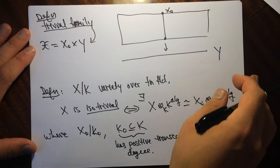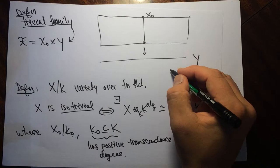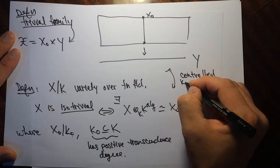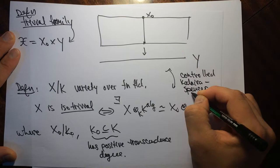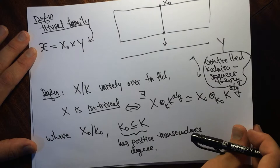Isotriviality and triviality are going to be measured by the Kodaira-Spencer class — this is controlled by Kodaira-Spencer theory. I'm going to talk about that in other videos.